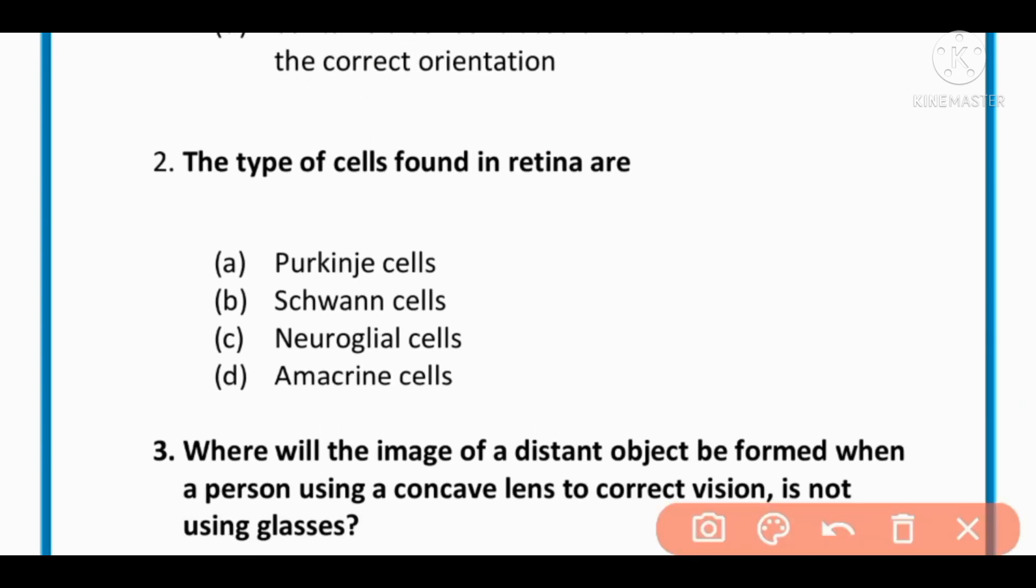MCQ number 2: The type of cells found in retina are: Purkinje cells, Schwann cells, neuroglial cells, or amacrine cells. The correct option is D: amacrine cells.